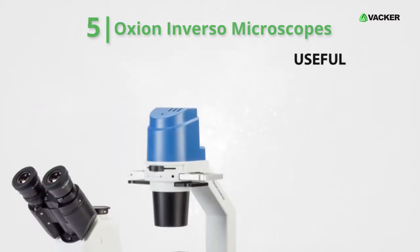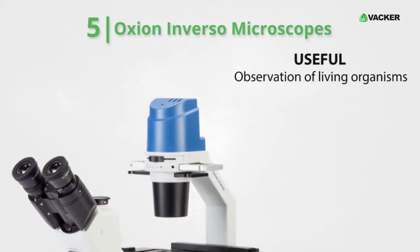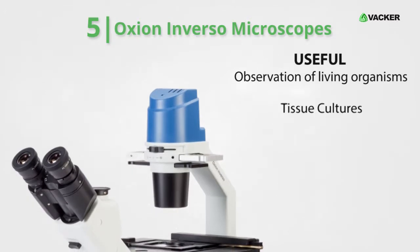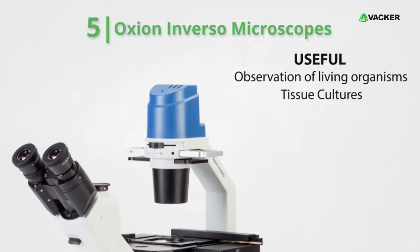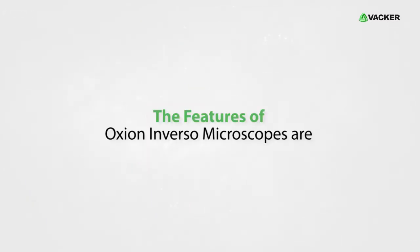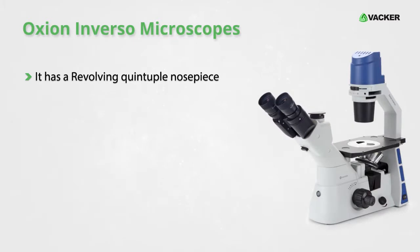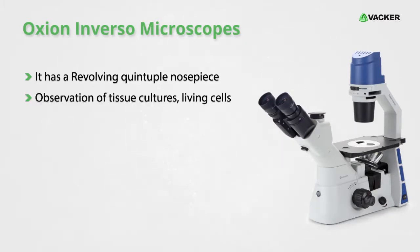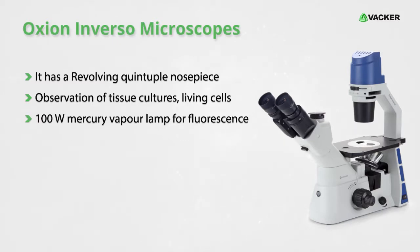These microscopes are useful for observation of living organisms and tissue cultures. The features of Oxyan Inverso microscopes include a revolving quintuple nosepiece, observation of tissue cultures and living cells, and a 100-watt mercury vapor lamp for fluorescence.